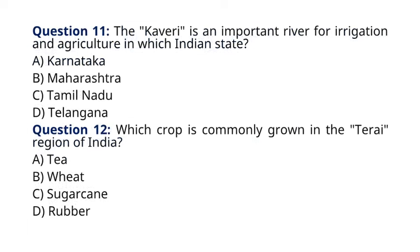Question 11: The Kaveri is an important river for irrigation and agriculture in which Indian state? The correct answer to question 11 is option A, Karnataka. The Kaveri River Basin is vital for agriculture in Karnataka as well as in Tamil Nadu.